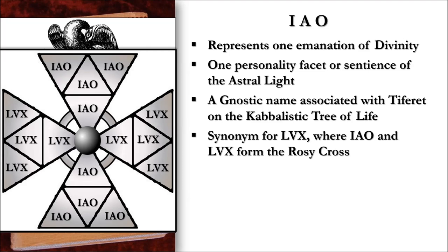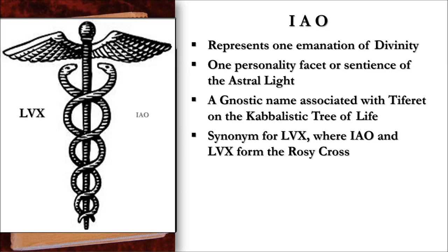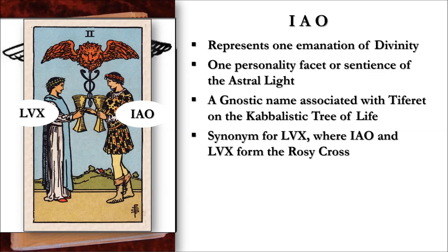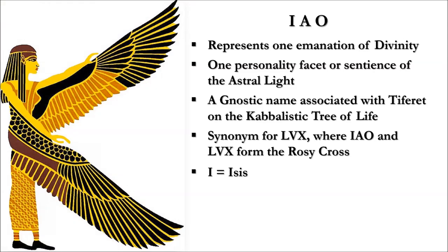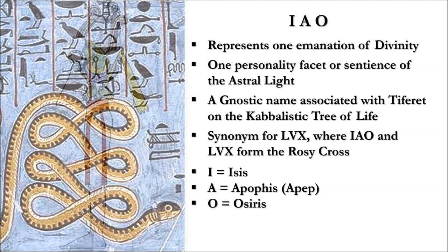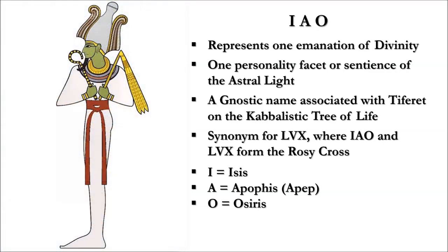LVX and IAO intertwined is also the Caduceus, which you will find repeated throughout the Tarot, hiding the secret nature of God in plain sight. IAO is the Holy Trinity, and in Egyptian mythos that's Isis — the Mother Goddess and emanation of magical power — Apophis (or Apep), the embodiment of chaos symbolized by the serpent, and Osiris, consort to Isis, god over both life and death, judgment, the underworld, and fertility.